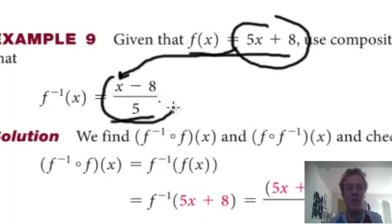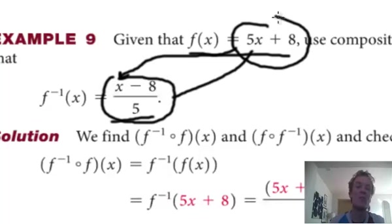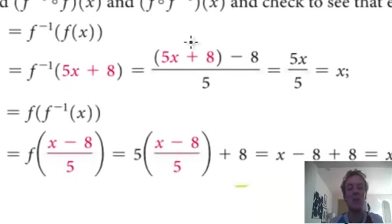Or I'll take this and put it there where the x is. So either way. First I'm going to do, I'm going to put the 5x plus 8 into the inverse. OK? So I'm going to replace the x with 5x plus 8. So here we go. Remember, this was the x here.